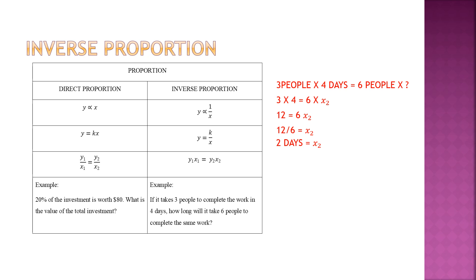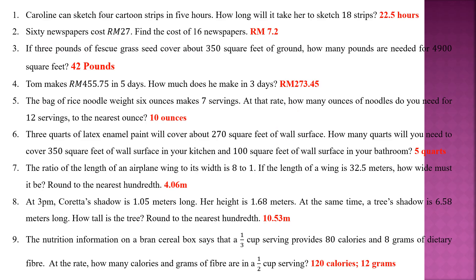Always remember: the question will never tell you whether it is direct or inverse proportion — you have to identify it yourself. If both variables move in the same direction, it is direct proportion. If they move in opposite directions — one increases while the other decreases — then it is inverse proportion.